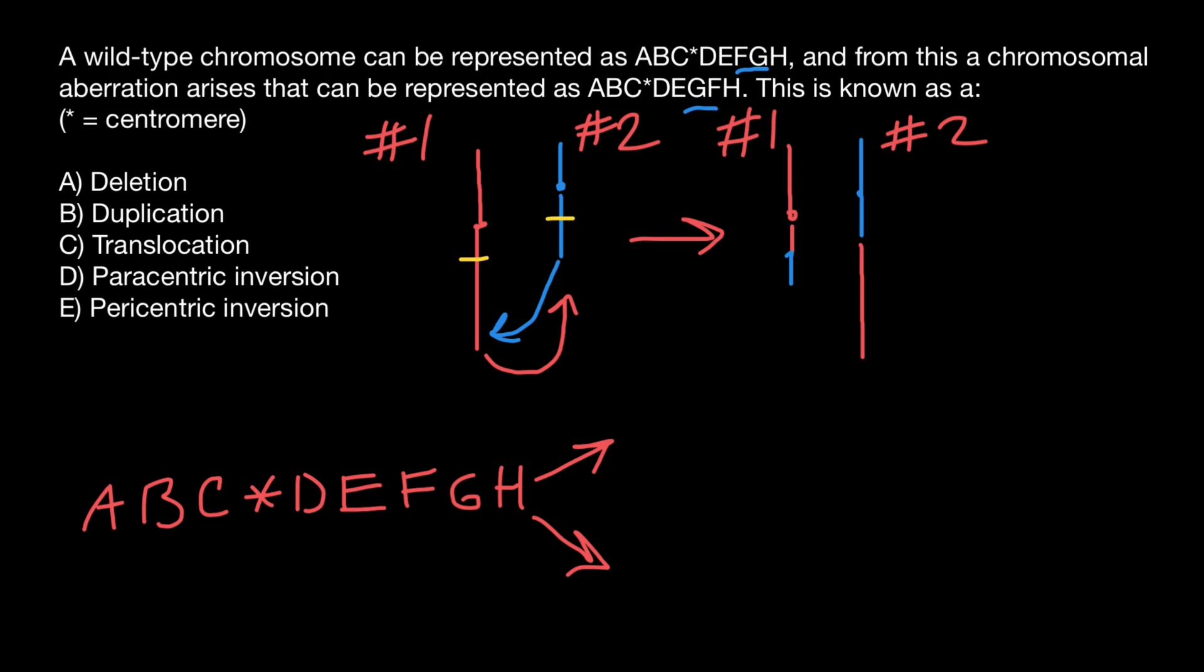But actually there can be two types of inversion, and one type would be, as in our example: A, B, C, centromere here, D, E, G, F, and H. And here is the inverted piece of the chromosome.